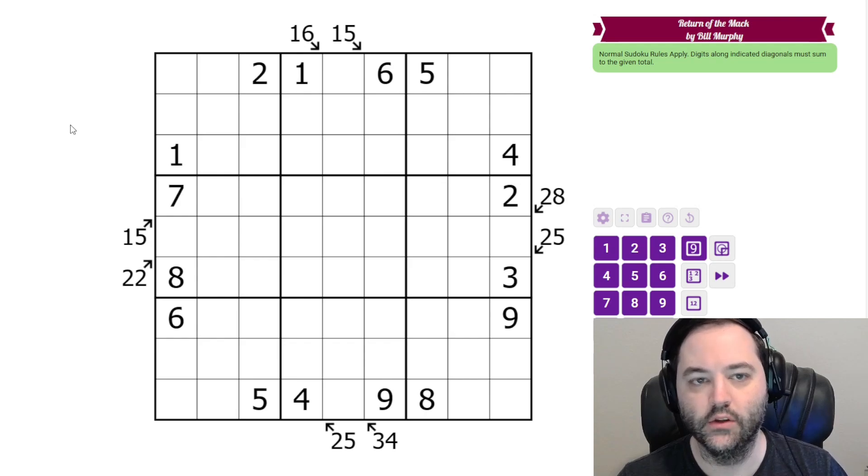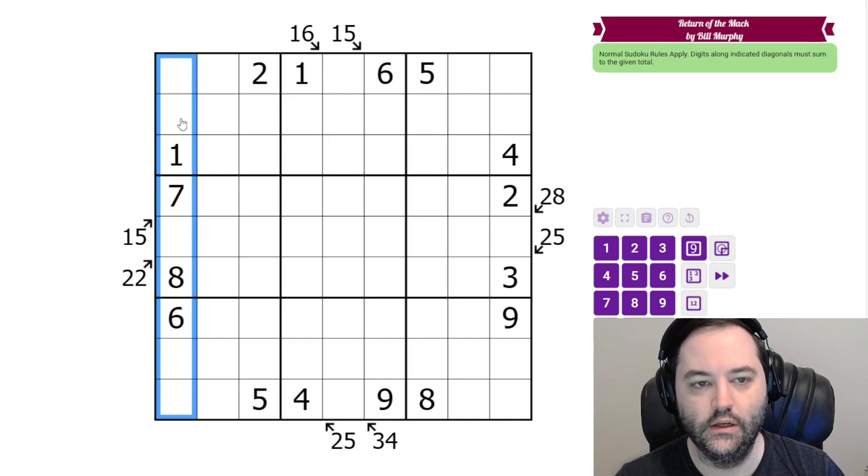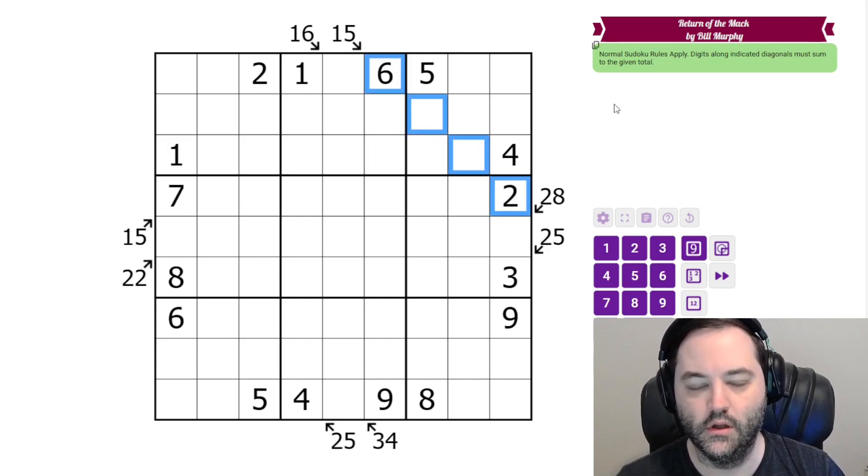And we have a little killer Sudoku. So normal Sudoku rules apply. One to nine in each row, column, and three by three box. Additionally, we have these clues outside the grid, and they give the sum along the diagonal that's pointed at by the arrow. So the sum of these four cells is 15. Digits can repeat along arrows. So there could be another two on this arrow, say, or another six. And those are the rules.